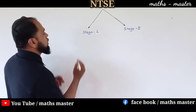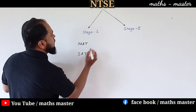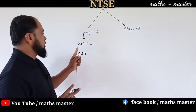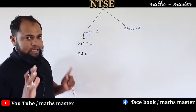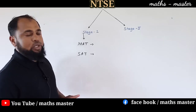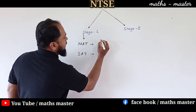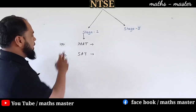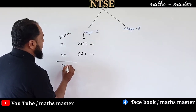In Stage 1, you have to write two papers: one is MAT and another one is SAT. MAT means Mental Ability Test, and SAT is Scholastic Aptitude Test. MAT is of 100 marks and SAT is also 100 marks, so altogether it is a 200-mark examination.